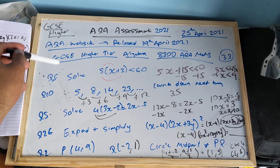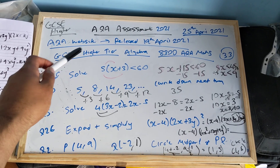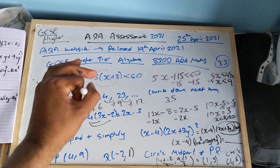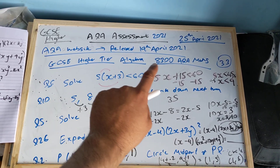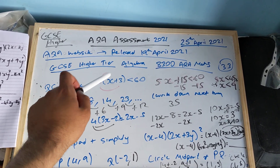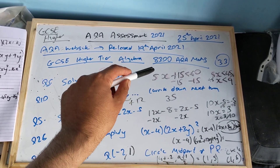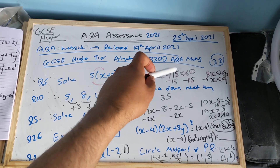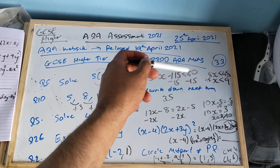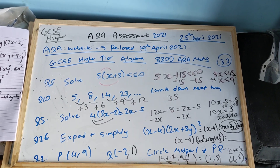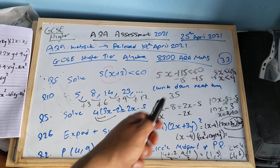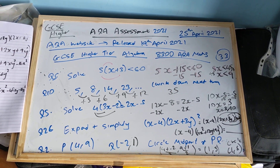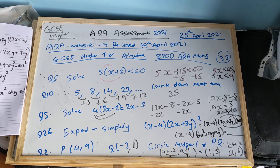So question five — the first question on this sheet. Solve 5(x + 3) < 60. Expanding the brackets: 5 times x is 5x, 5 times 3 is plus 15. So 5x + 15 is less than 60. The opposite of adding 15 is to minus 15 from both sides. 5x is less than 45. 5x means 5 times x, so the opposite is divide by 5. So x is less than 45 divided by 5, which is 9. So x is less than 9.